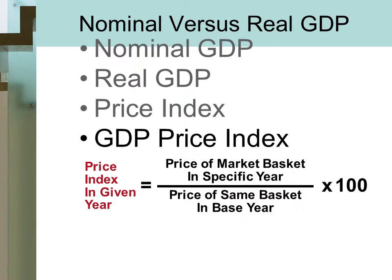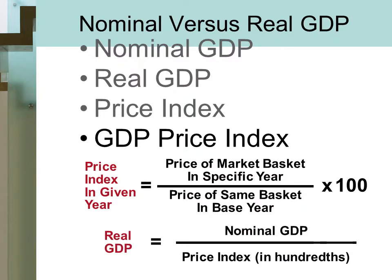When we pick a price market basket in a specific year, we call that the base year. The formula is: nominal GDP divided by the price index in hundreds equals real GDP. Real GDP is the inflation-adjusted value of GDP — GDP adjusted for those increases in prices. Keep in mind there could be deflation, as Japan has suffered through bouts of deflation over the past two decades.